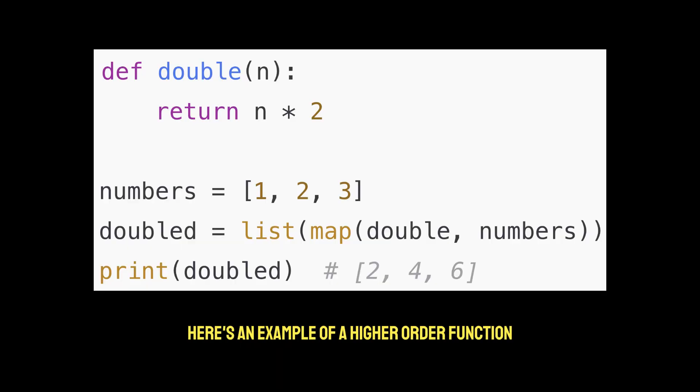Here's an example of a higher order function taking a function as input. Think of a scenario where you want to apply some operation to every number in a list. Instead of writing a loop every time, you can use a higher order function like map. Map is the higher order function because it takes double, which is another function, as its input. It applies double to each element in numbers for you.